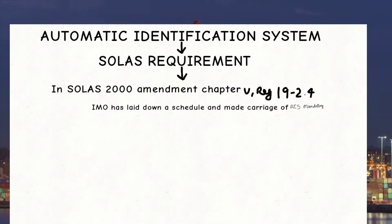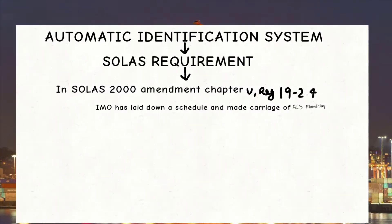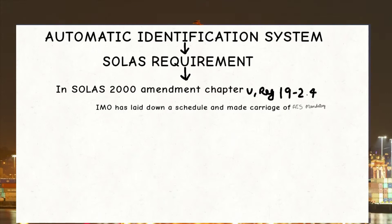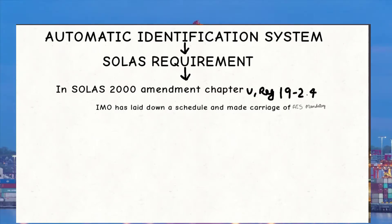In SOLAS last 2000 amendment Chapter 5 Regulation 19.2.4, IMO laid down a schedule and made carriage of AIS mandatory. New ships above 300 gross tonnage constructed on or after 1st July 2002 and engaged on international voyages shall have the AIS fitted.